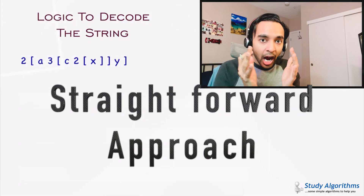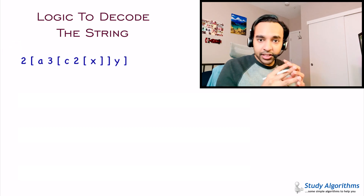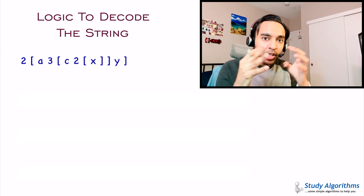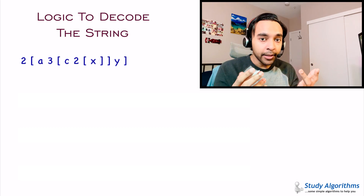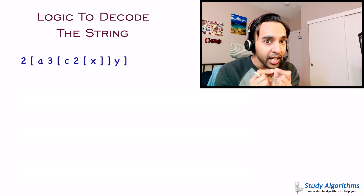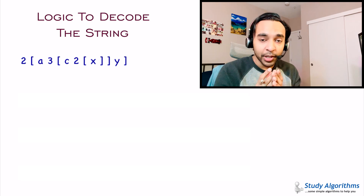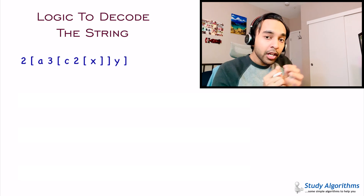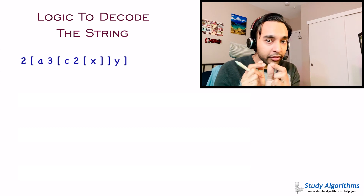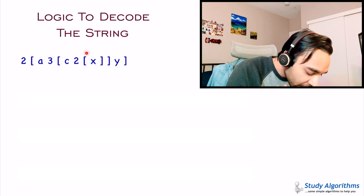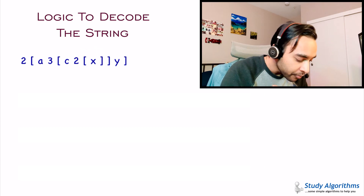Let us try to first generalize how you can solve this problem in the most logical way. Consider a string with many brackets including nested brackets. First, you need to find the innermost bracket. When solving mathematical expressions with brackets, you do not solve the outer brackets first. You try to find the innermost brackets. In this expression, the innermost bracket is the one I have to decode first.